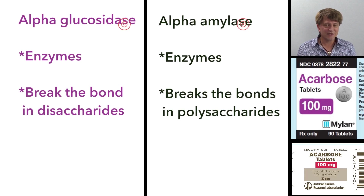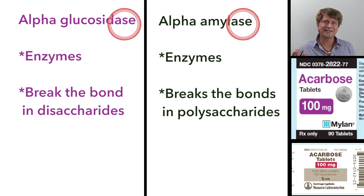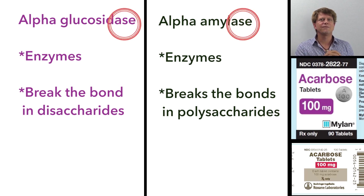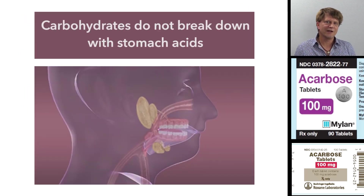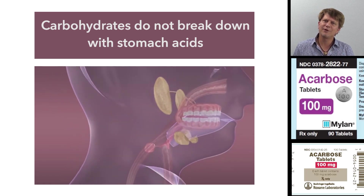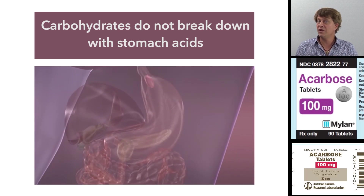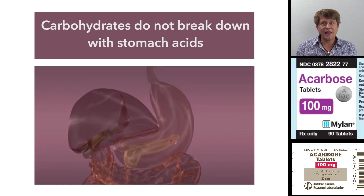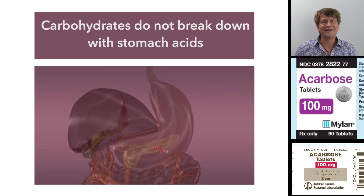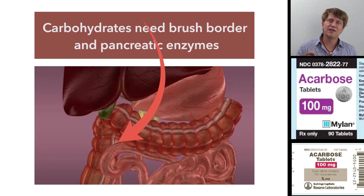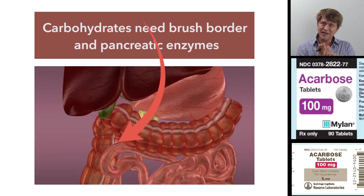Obviously, they're enzymes because of the fact that the name has the '-ase' suffix. But in order to understand the rest of it, we're going to have to go back to our physiology. Remember with carbohydrates that we weren't able to take a big polysaccharide or even a disaccharide and absorb it. It's not going to be broken down by acids alone — what disaccharides and polysaccharides actually need is an enzyme to cleave a bond.